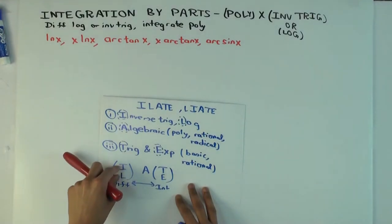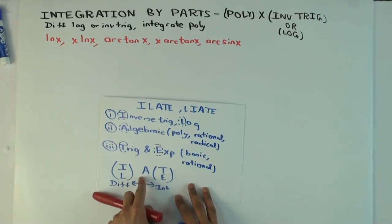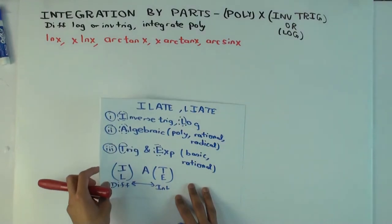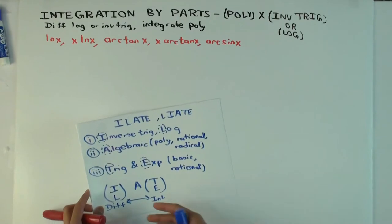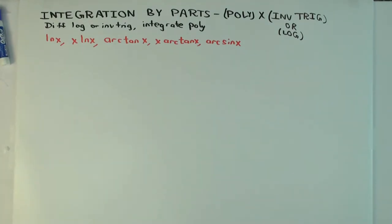The hope is that the inverse trig or log thing, when you differentiate, becomes algebraic, and then you take a product of that with the integral of the polynomial, and that's a purely algebraic integration, which is a simpler problem in some sense. You may not know how to do all algebraic integrations, but there's a sense in which they are simpler. Let's do the first example.